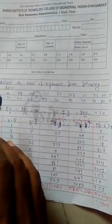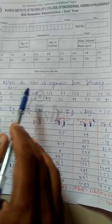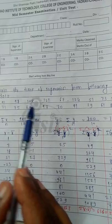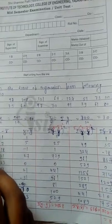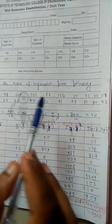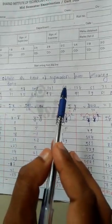Good morning. The question is to obtain the lines of regression from the following data. Here you have the given values of x and y, and the question is to find the lines of regression.